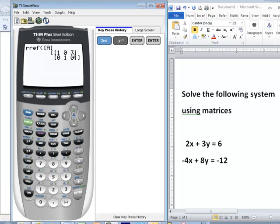Here is our reduced row echelon form of the matrix. Remember the first column represents our x's, the second column represents our y's, the third column represents our answers. So this is 1x plus 0y is equal to 3, so x is equal to 3. And 0x plus 1y is equal to 0, so y is equal to 0.